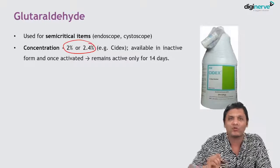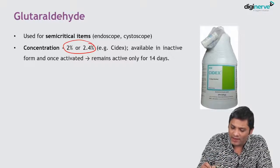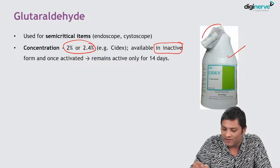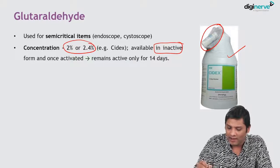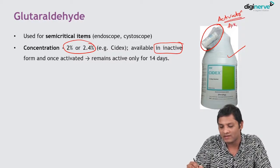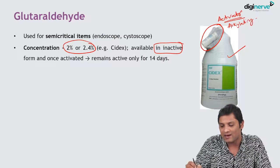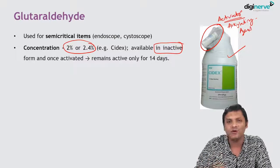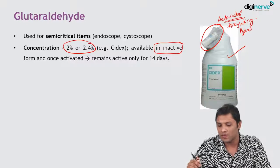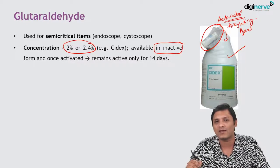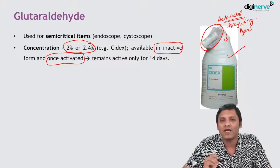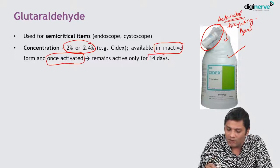Glutaraldehyde is usually available in a concentration of 2 to 2.4 percent, in inactive form. It is always available along with an activator, which is an alkalizing agent. When you open the glutaraldehyde box, you must add and mix the activator with it so that it becomes activated. Once activated, it will work efficiently for only 14 days.